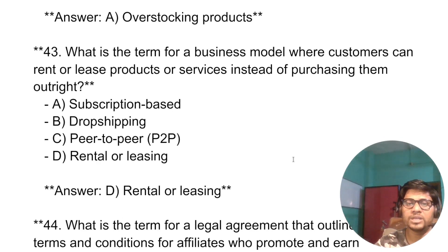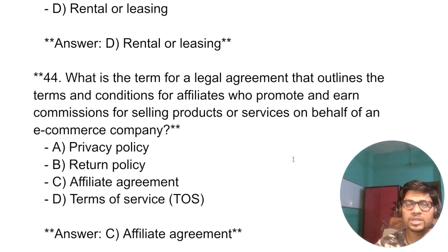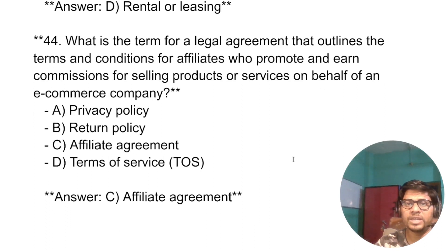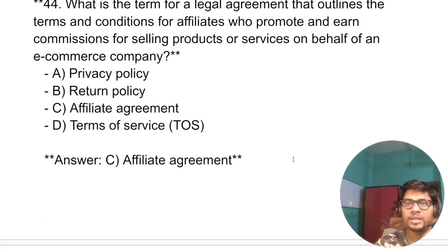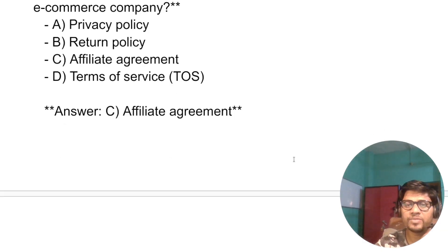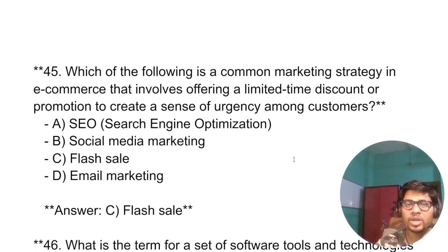What is the term for a business model where customers can rent or lease a product or service instead of purchasing it outright? The answer is: rental or leasing. What is the term for a legal agreement that outlines the terms and conditions for affiliates who promote and earn commissions for selling products or services on behalf of an e-commerce company? That is an affiliate agreement.